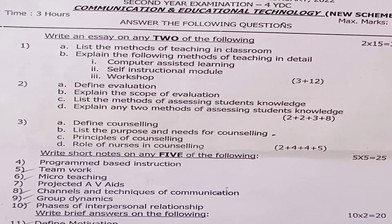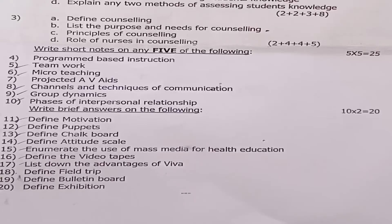Next, moving on to short notes: write short notes on any five of the following. Question 4: program-based instruction. Question 5: team work. Question 6: micro teaching. Question 7: projected AV aids. Question 8: channels and techniques of communication. Question 9: group dynamics. Question 10: phases of interpersonal relationship. Out of these seven questions, answer any five — five into five equals 25 marks.